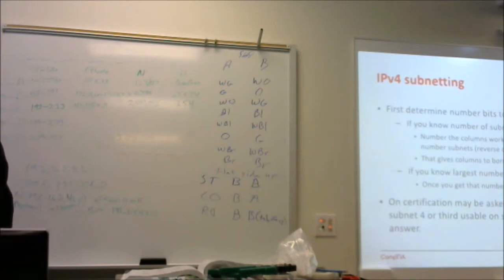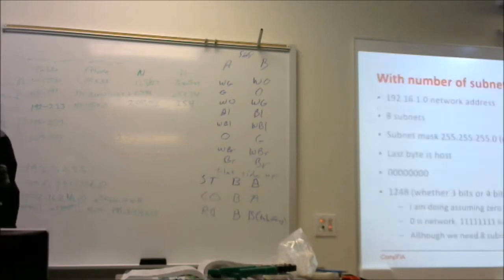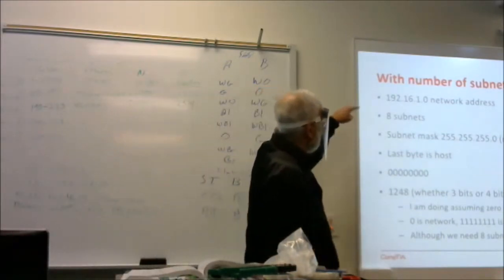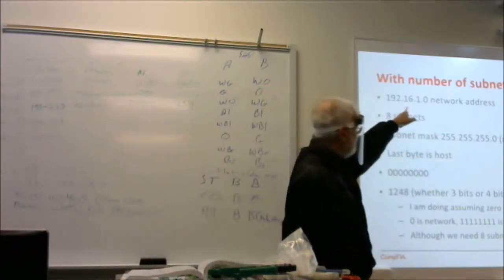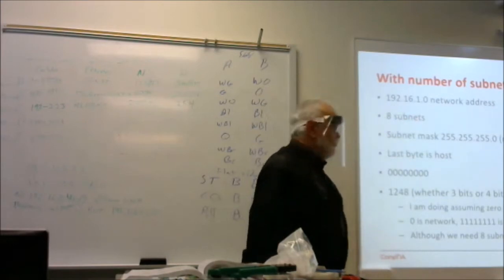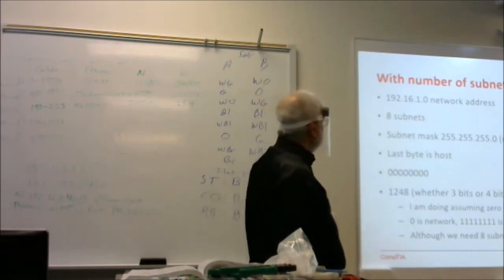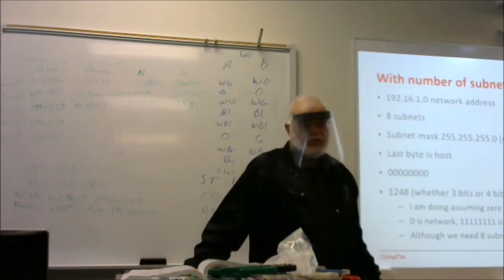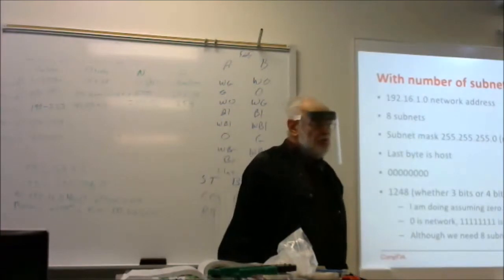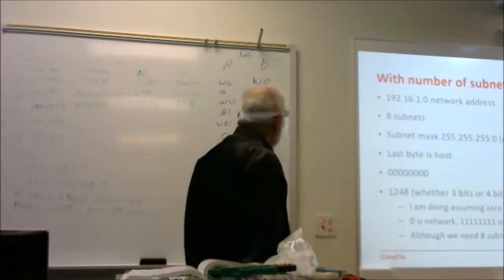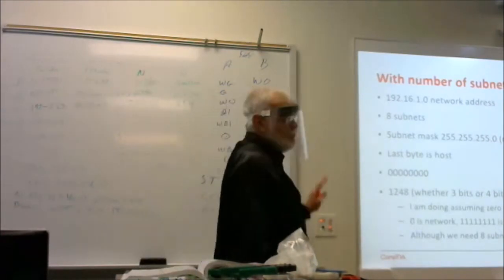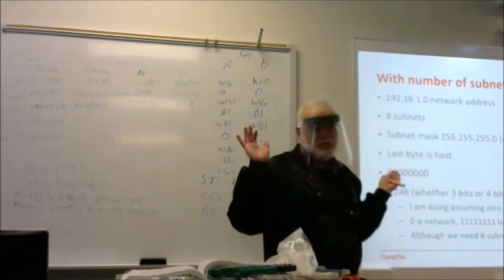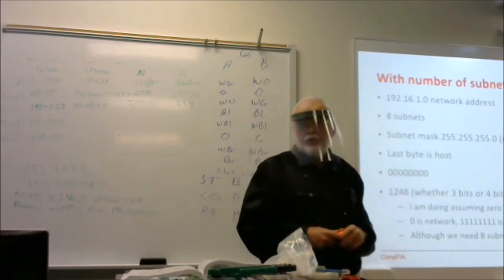I'm actually going to show you some shortcuts too. So, the address we were given is a network address of 192.168.1.0 — that's a private address. It's not 192.16, which would be a public address used out there by someone. It's 192.168, so that's private.